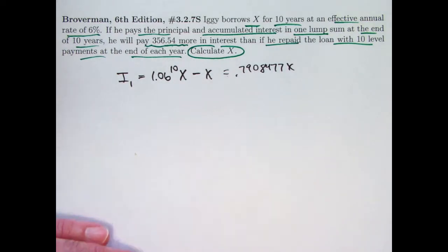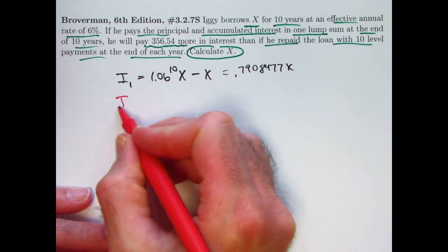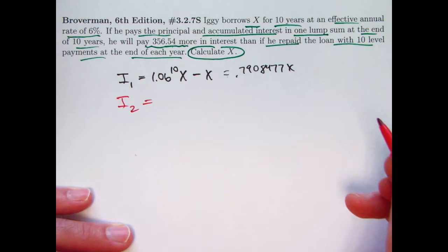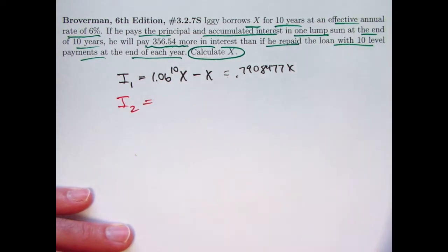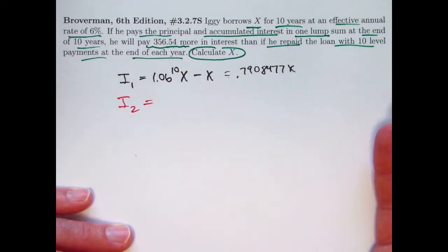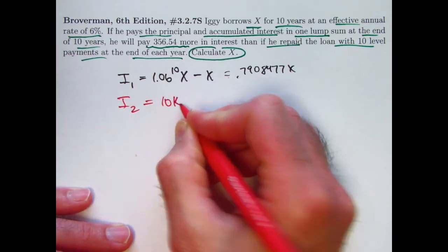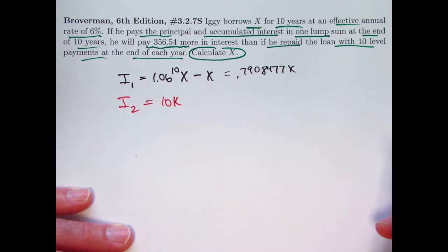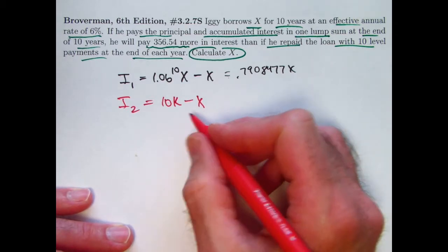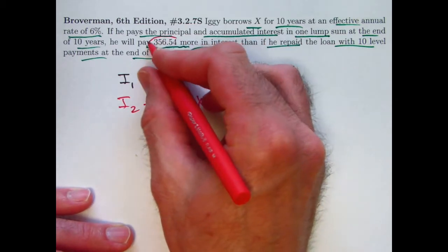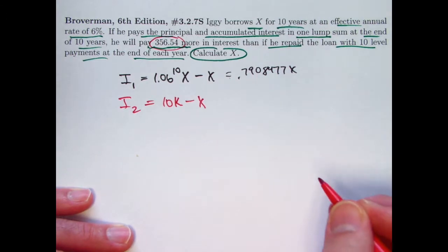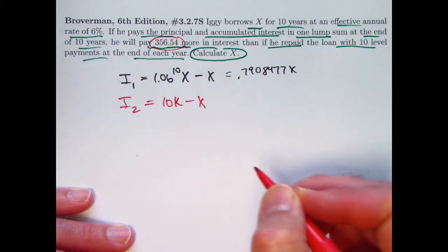What about plan 2? How much interest is paid? He's paying a certain amount, call it K, at the end of every year for 10 years. 10 times K, then, would be the total amount paid over those 10 years. Once again, subtract the loan amount, X, and that's the amount of interest that is paid. This thing plus 356.54 equals the first thing. Let's get this thing in terms of X, though, first.